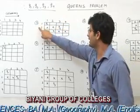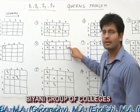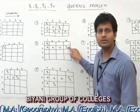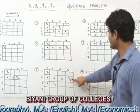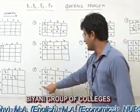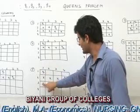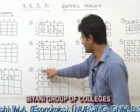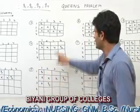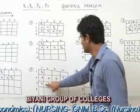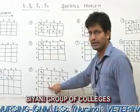After backtracking, we place Q2 at column 4 instead. Now Q3 is to be placed in row 3. Column 1 is not valid because Q1 and Q3 are in the same column. Column 2 is a valid position for queen Q3.